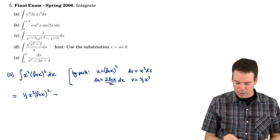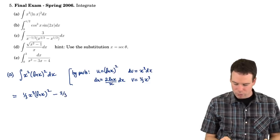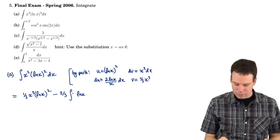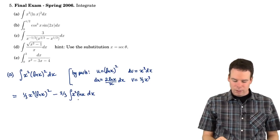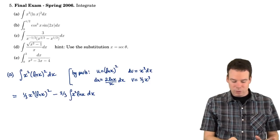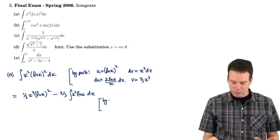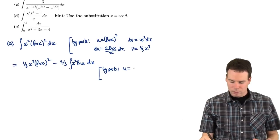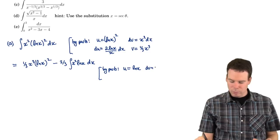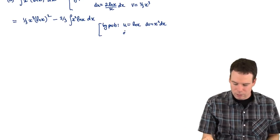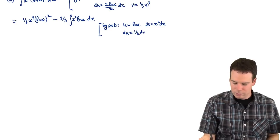So we might be in good shape here. That gives us minus the product of these two, so that's two-thirds times the integral of ln(x) times x squared dx. Now at this stage, it might be worthwhile to try by parts again because I've reduced the power on the logarithm by one. So maybe we can do that again and get rid of it altogether. I'll take u to be ln(x) and dv to be x squared dx.